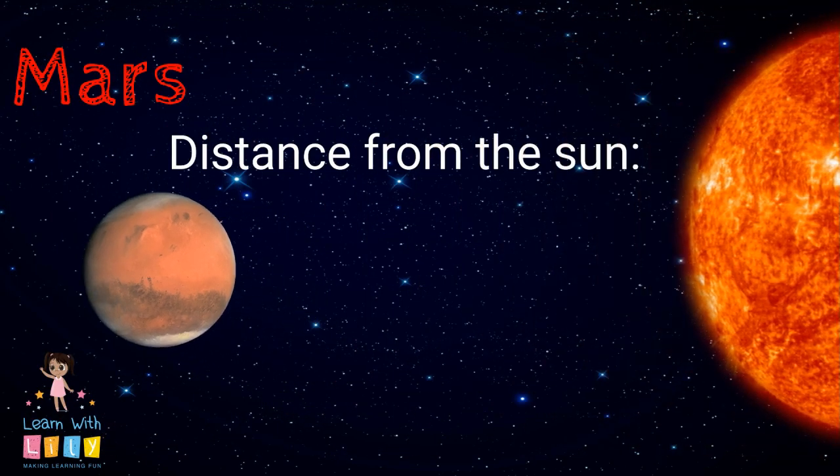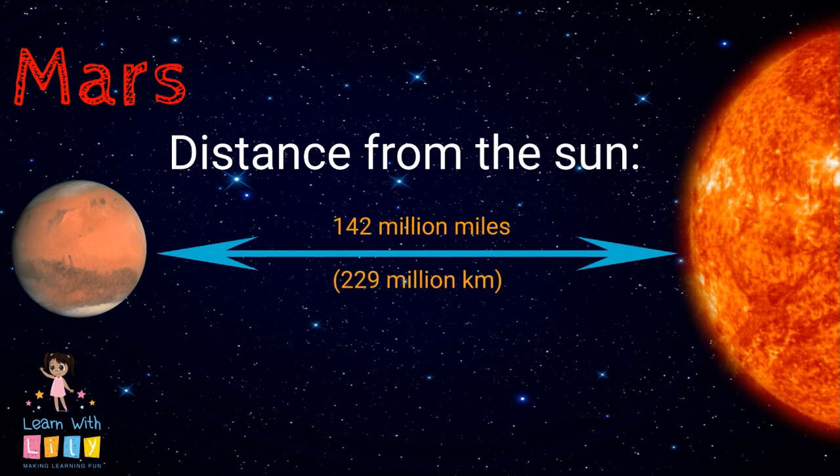Do you know how far away Mars is from the Sun? I'm not sure. How far away is it? It's 142 million miles! That's about 229 million kilometers. It sure is.